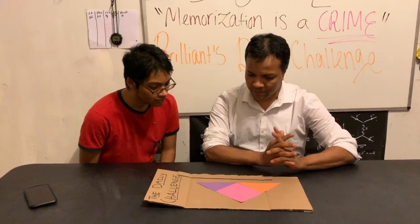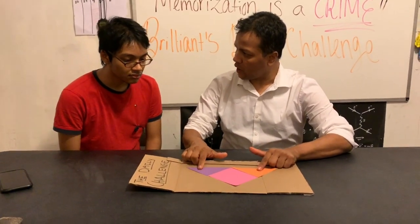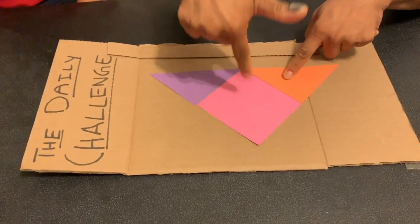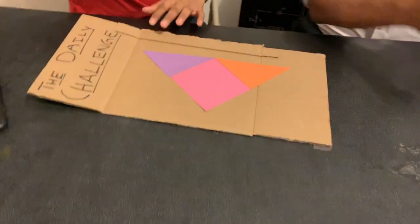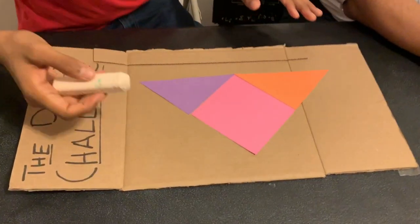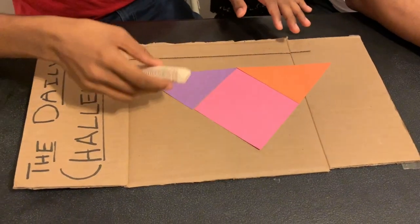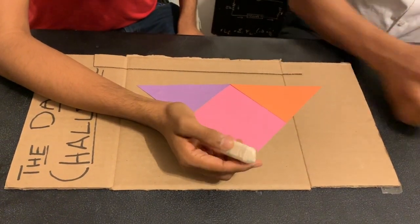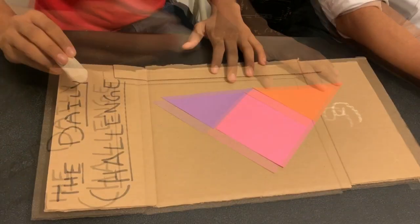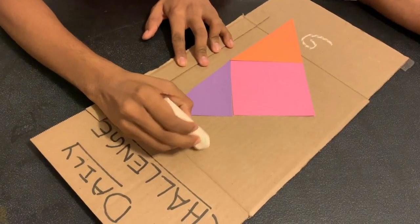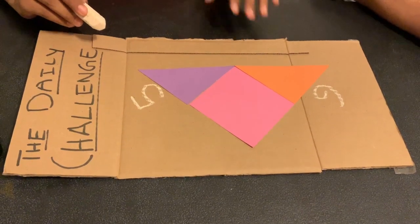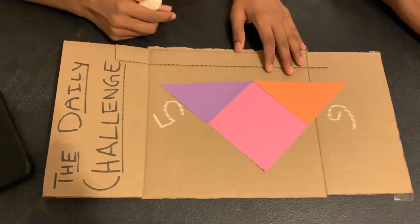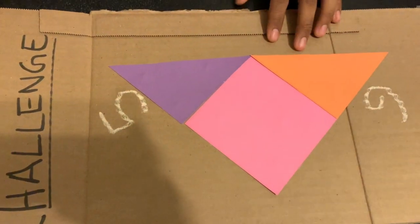I have two triangles and one rectangle. I wanted to find the area of the pink region. I need some more information — some side information. This side is six, this side is five. If you want this side to be five, let it be five. I have to find the area of this pink area. I'm ready to take the challenge.